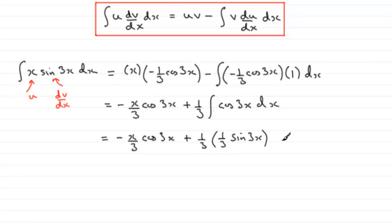And don't forget your constant of integration, which I'll call plus c. And finally, if we expand the last term here, we're going to get plus 1 9th sine 3x. And then plus that constant c of integration. OK, so integration by parts.